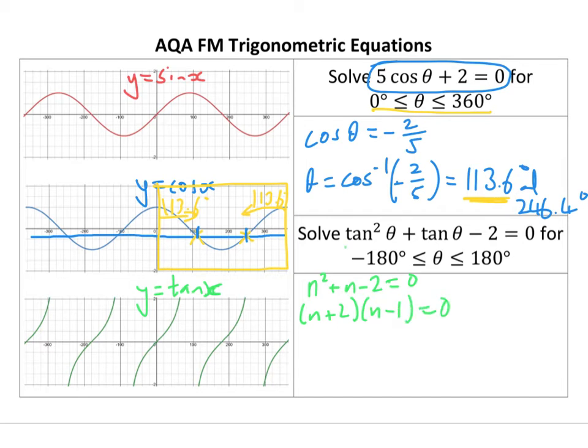And all the n is doing is representing the tan thetas here. So actually what I've got when I factorize that is tan theta plus 2 times tan theta minus 1 equals 0. Now, that means that tan theta is negative 2, and tan theta equals 1.